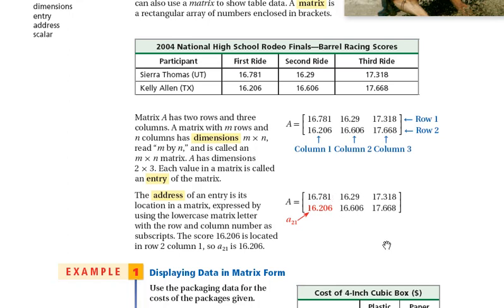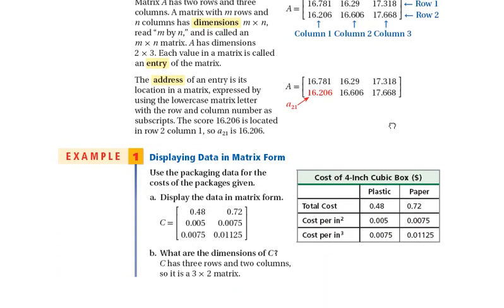So you can talk about each of these having a certain address, each of these numbers here having a certain address for them, and basically when we display a matrix, we're just taking these numbers here, some data and information, and putting them in a nice neat organized table called a matrix. In this example here, we have a 3 by 2, because we're talking about 3 rows and 2 columns.